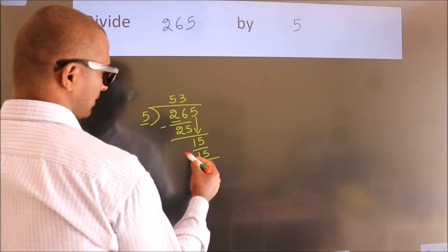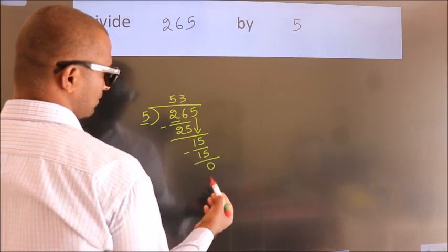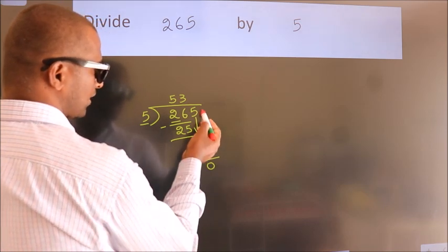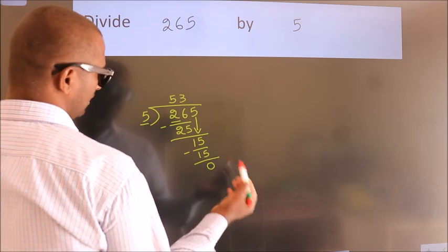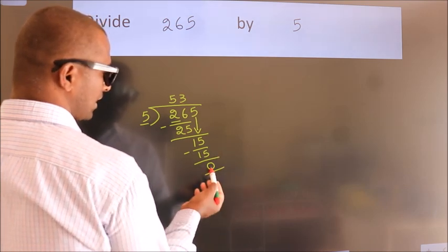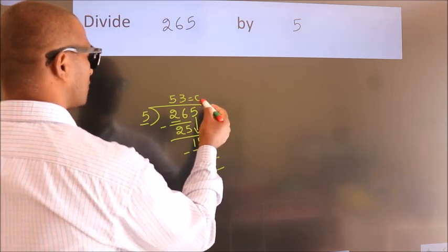Now, we subtract. We get 0. After this, no more numbers to bring down. We got remainder 0. So, this is our quotient.